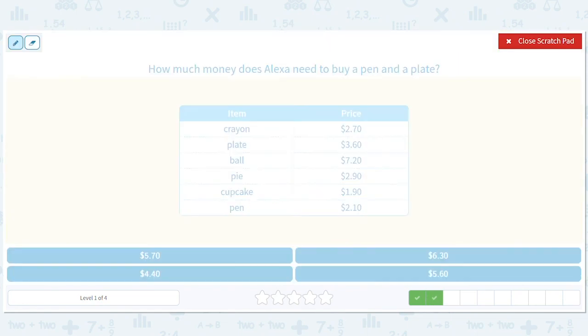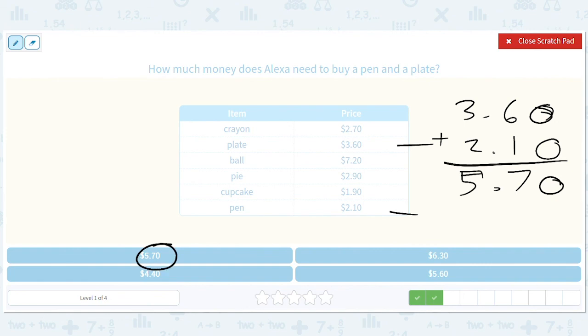How much money does Alexa need to buy a pen and a plate? Pen and plate - alright, 3.60 plus 2.10, zero, seven, five, five. So it should be five dollars and seventy cents for the plate and pen. Got some nice alliteration there.